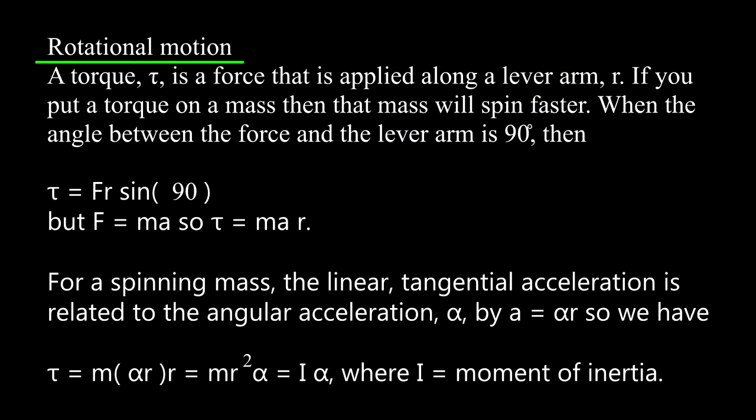In rotational motion, a torque tau is a force that is applied along a lever arm r. If you put a torque on a mass, then that mass will spin faster. When the angle between the force and the lever arm is 90 degrees, then the torque equals F times r times sine of 90 degrees. But F equals ma, so torque equals ma times r.